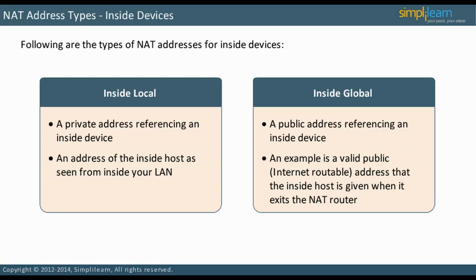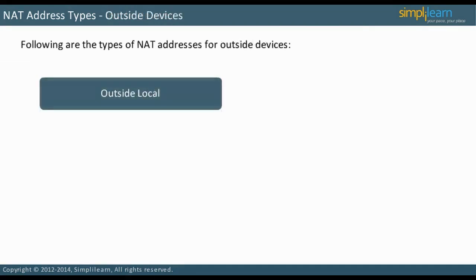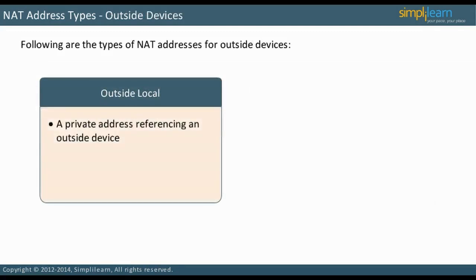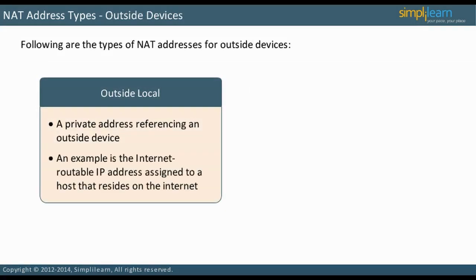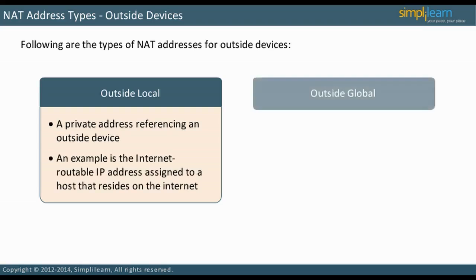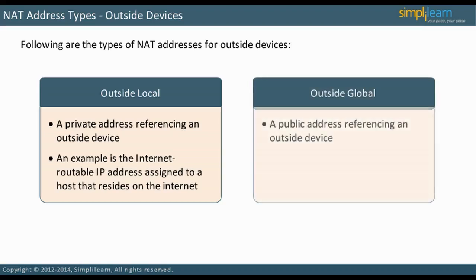An outside local address is a private address referencing an outside device — it is the address of the outside host as seen from inside your LAN. An example is the internet-routable IP address assigned to a host that resides on the internet. An outside global address is a public address referencing an outside device — it is the address of the outside host as seen from the internet.